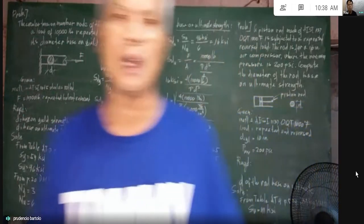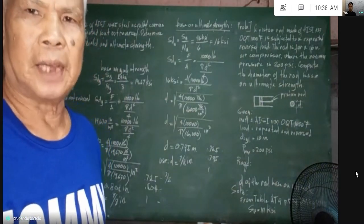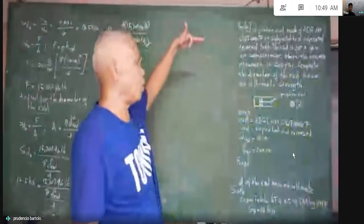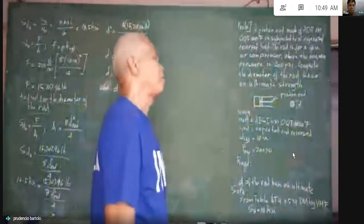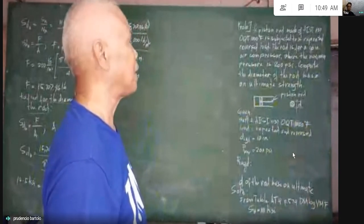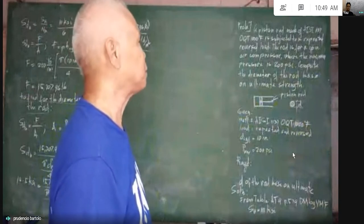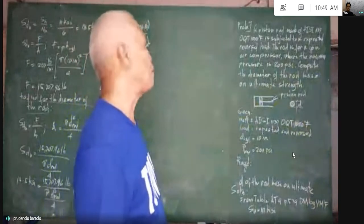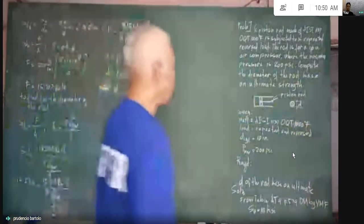The next problem we are going to consider involves compressive stress. We have here a piston rod made of AISI 1137 OQT 1000 degrees Fahrenheit subjected to a repeated reversed load. The rod is for a 10-inch air compressor where the maximum pressure is 200 PSI. We are asked to compute the diameter of the rod based on ultimate strength.